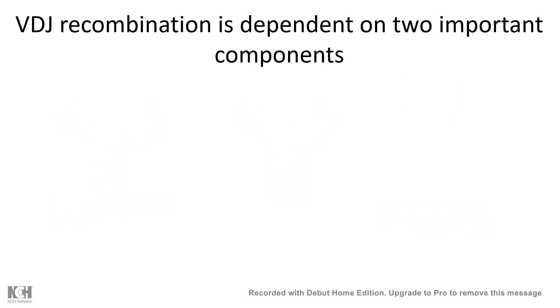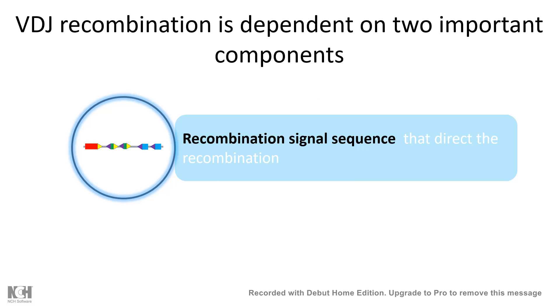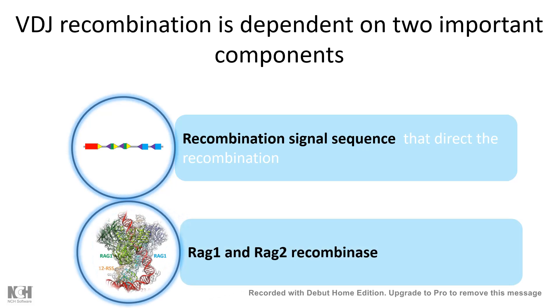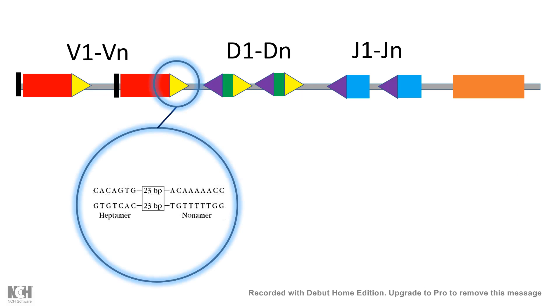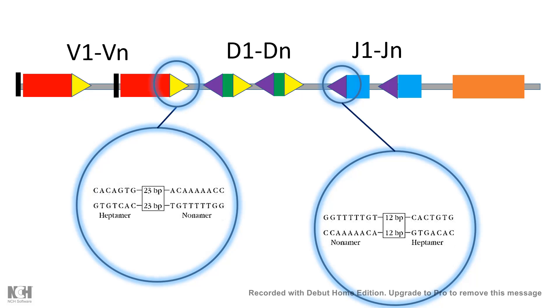VDJ recombination depends on two components: first, the recombination signal sequences (RSS) present in the gene segments; second, the recombinase enzymes that help in recombination. After every gene segment, there are small signal sequences.